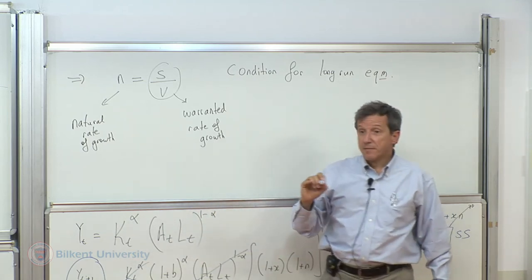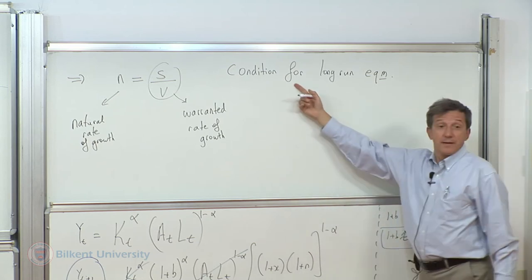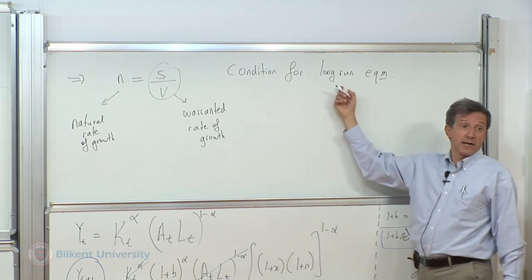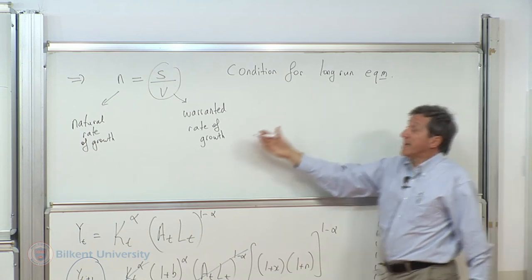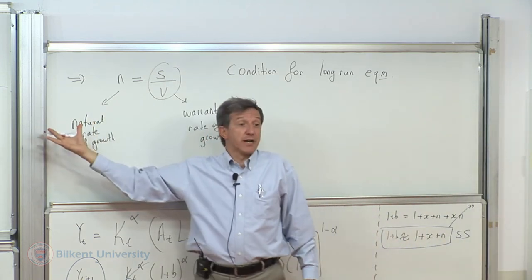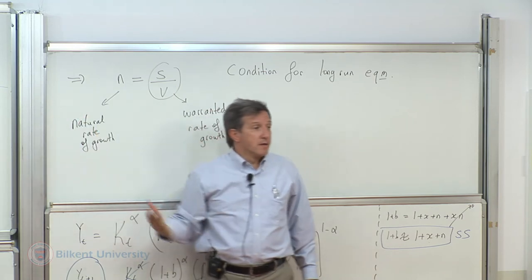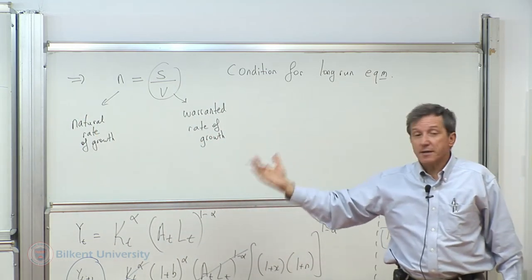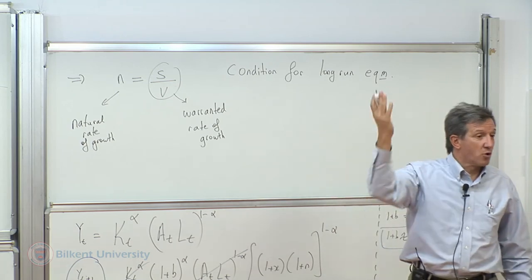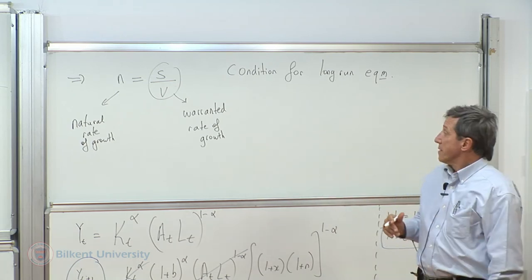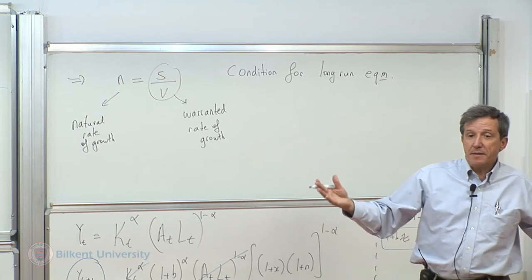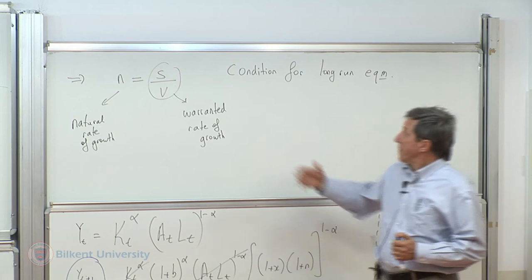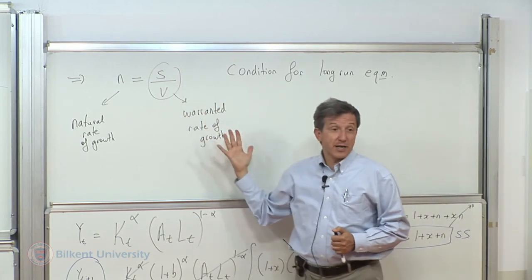It is warranted because it has to satisfy in aggregate for long run equilibrium. You cannot do much with the natural rate. It is the economies, households, agents, tastes and preferences, historical conditions. It has to be adapted to. What will adapt? The warranted rate of growth.